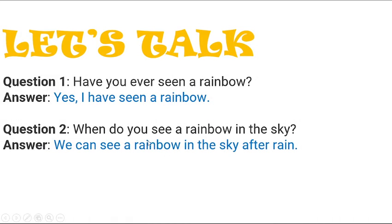Question 2: When do you see a rainbow in the sky? Answer: We can see a rainbow in the sky after the rain, when the rain has stopped and the sun comes out.